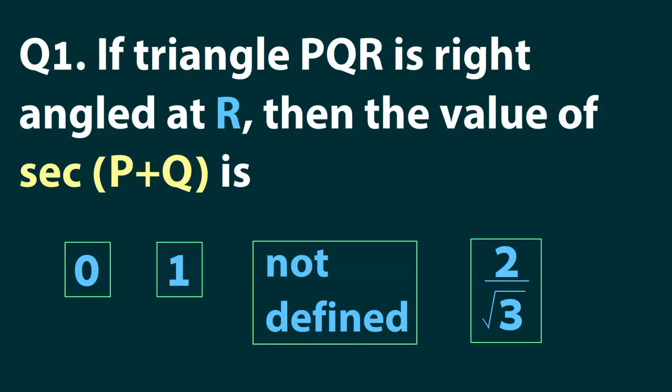Let's find out how to solve this trigonometric question. If triangle PQR is right angled at R, then the value of sec(P+Q) is which of the following? Let's find out how we solve a question like this.